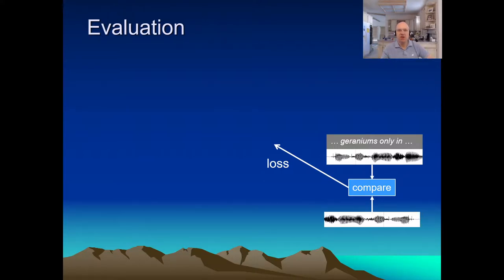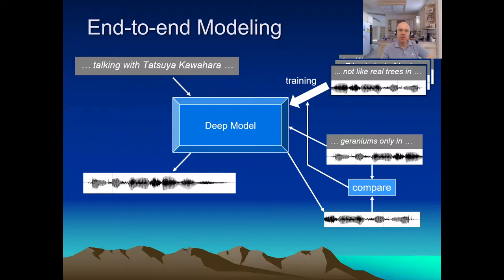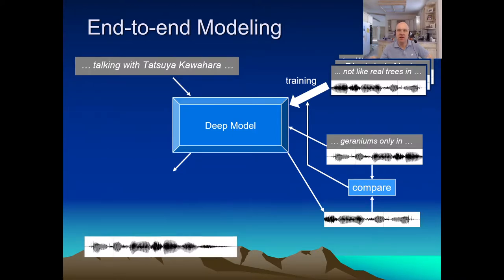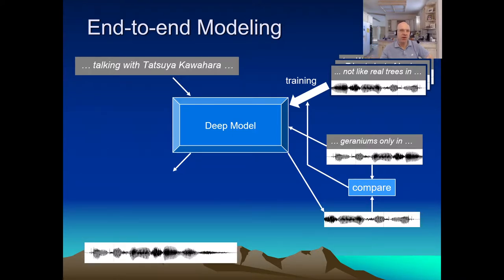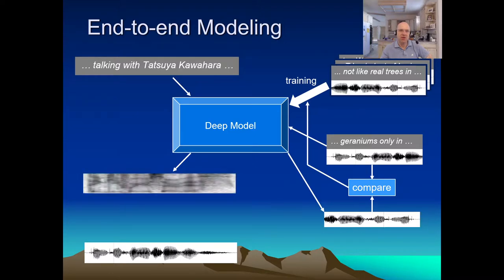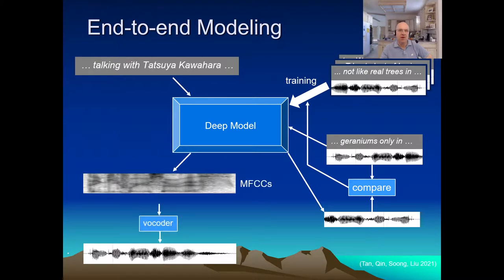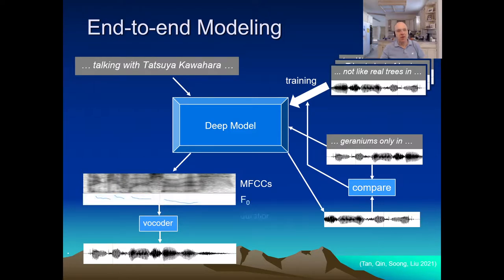There are many other choices in modeling. For some systems the output is the signal directly, but for others the output is a spectral representation, which is then converted to an actual speech signal by a vocoder. Some vocoders take only the spectral information; others also take the desired pitch and maybe the phoneme durations. So some models predict those explicitly.